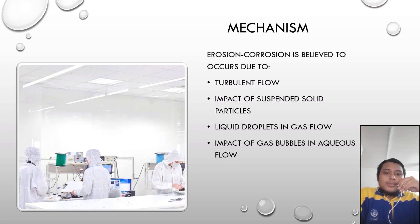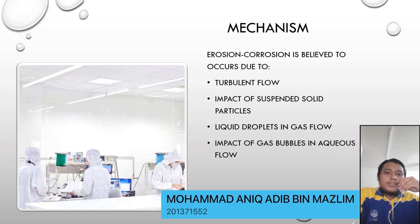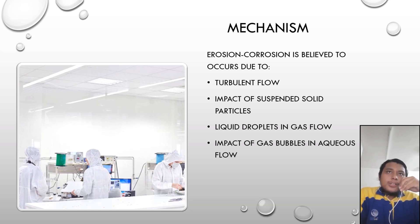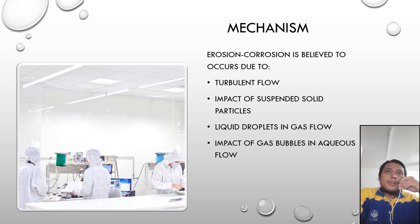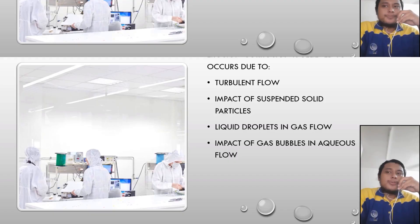I would like to tell you about the mechanism behind erosion corrosion. It is believed to happen due to four factors: first, turbulent liquid flow; then impact of suspended solid particles; then liquid droplets in gas flow; and impact of gas bubbles in aqueous flow.